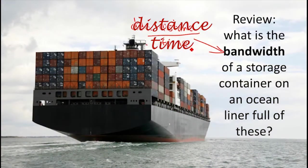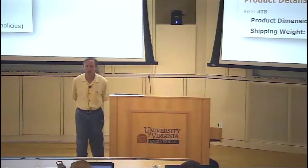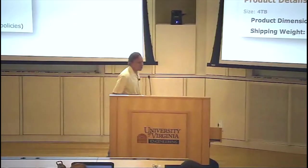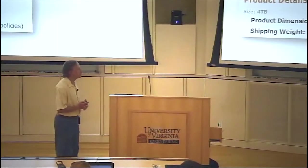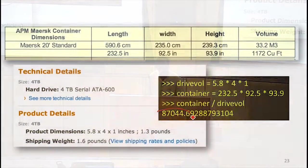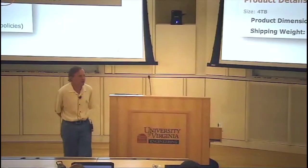Let's be more specific and actually figure this out — we need some information about shipping containers. This is very well standardized: there are 20-foot or 40-foot containers, and we've got the dimensions of our hard drive. We'll be conservative and assume we need that amount of space for each one. We can calculate how many boxes fit in one container, and I get 87,000. I have not tried to fit 87,000 hard drives into a shipping container.